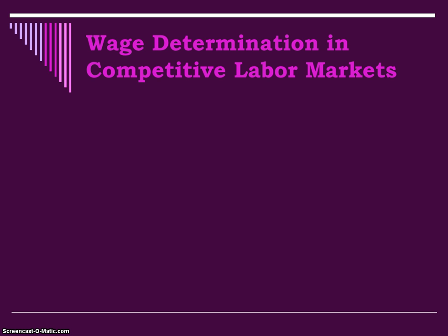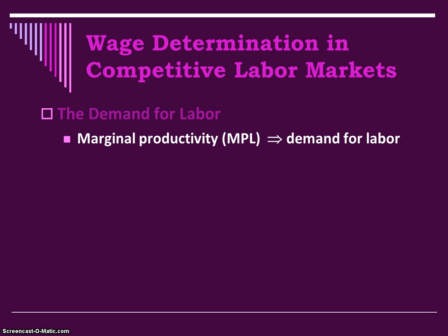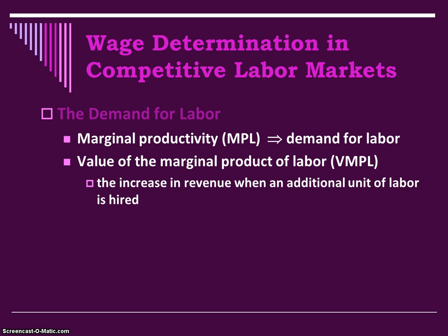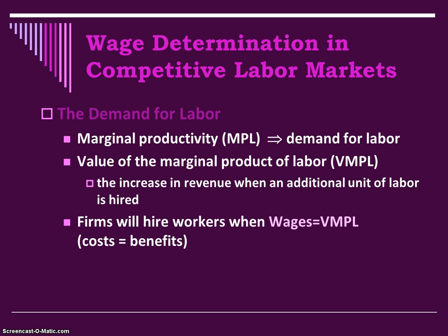In competitive labor markets, wages are determined based upon the supply and demand for labor. The demand for labor, as we learned yesterday, is based on the marginal productivity or the value of the marginal product of the inputs. That demand curve for labor becomes the value of the marginal product of labor curve. The increase in revenue when an additional unit of labor is hired is the VMPL. Firms are going to hire workers until the point when the marginal cost — the wage — is equal to the marginal benefit, or the VMPL that worker brings in.